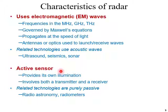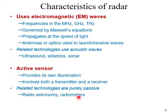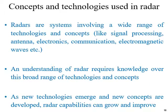Radar is nothing but an active sensor. Why is it an active sensor? Because it provides its own illumination — that means a transmitter is present along with the radar system, involving both a transmitter and receiver. Related technologies are purely passive, such as radio astronomy and radiometers. In radiometers, the principle is almost identical in that it receives a signal, but the signal is generated by the target itself — it is not illuminated by the radar. Radars are systems involving a wide range of technologies: signal processing, antenna, electronics, communication, and electromagnetic waves.